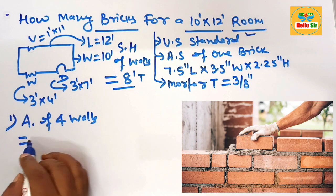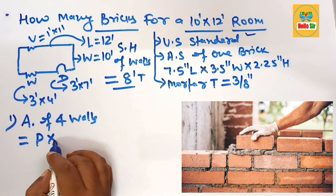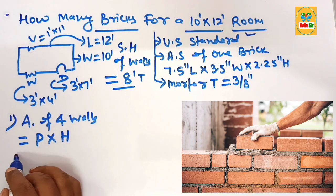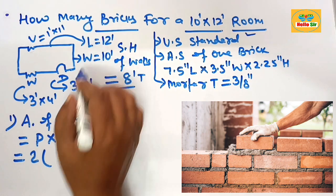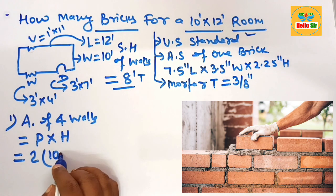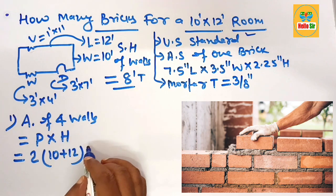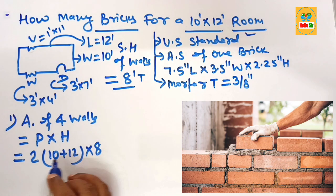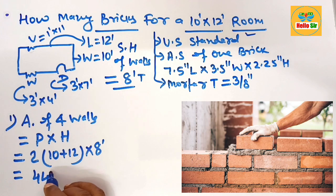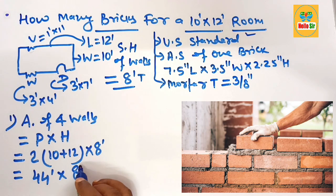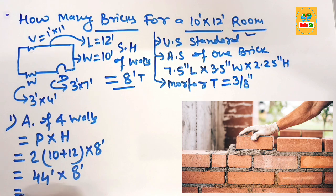Area of 4 walls equals the perimeter of walls multiplied by the height. How do we calculate the perimeter? Multiply 2 times the sum of length and width: 2(10 + 12) = 44 feet. Then multiply by the wall height of 8 feet: 44 × 8 = 352 square feet.